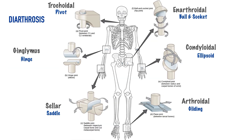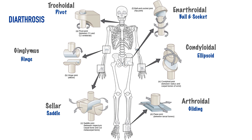Moving on to diarthroses, or freely movable joints. The trochoidal joint, more commonly called a pivot joint, involves one segment rotating while maintained in a confined position, so the movement is rotational in nature. The ganglimus joint, more commonly referred to as a hinge joint, functions like a door, only allowing movement in one plane of motion — those motions being flexion and extension.